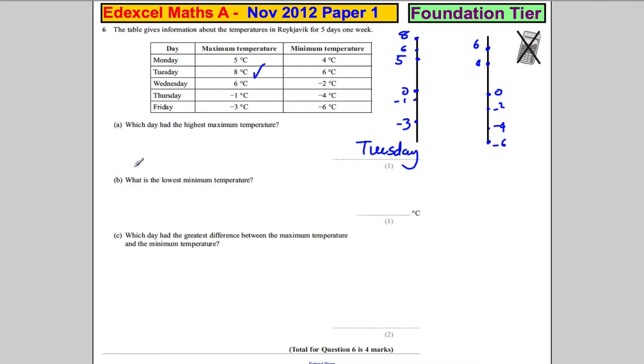Now, it says in this question, it's important to read it: what is the lowest minimum temperature? Here, we're not after a day, we're asked to state the temperature, so it's negative six degrees Celsius.